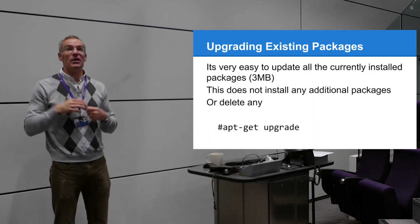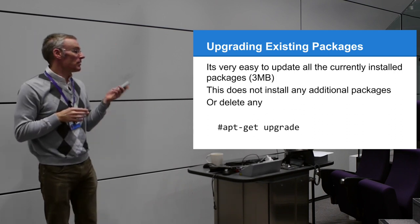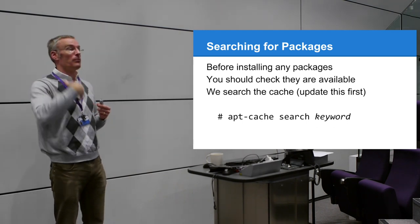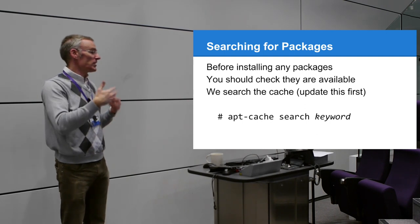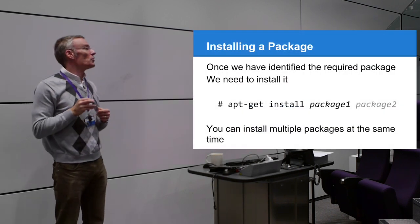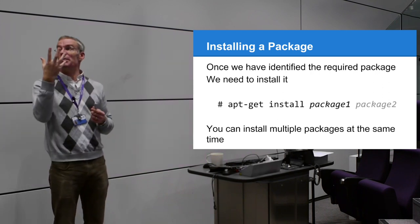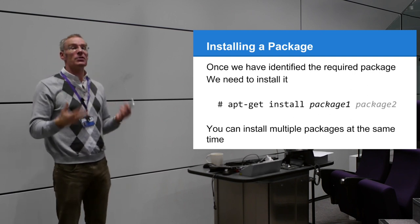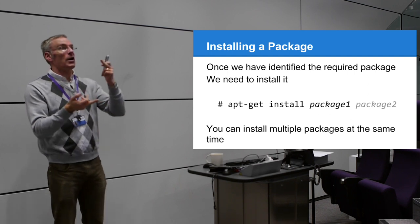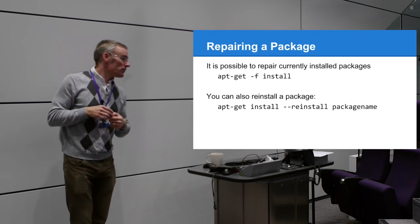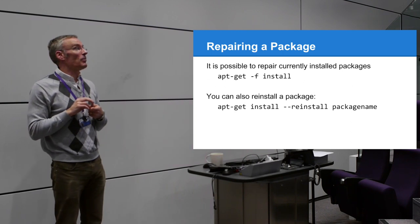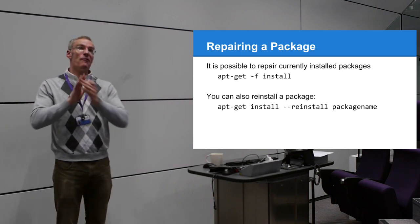Once updated, search for packages with `apt-cache search <package name>` - it searches the locally cached package list and gives results. To install: `apt-get install <package name>`. If it's a large package it tells you the disk space required and asks for confirmation - default is yes so just press Enter. You can also run `apt-get -f install` to repair any corrupted or missing packages currently installed in one command.